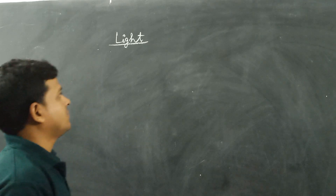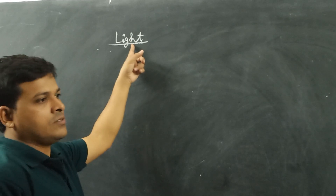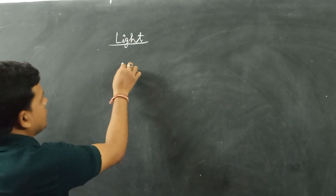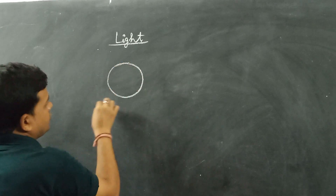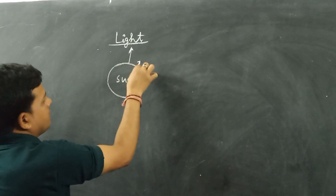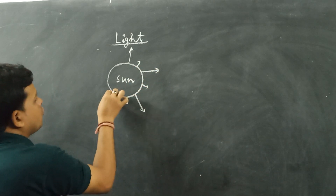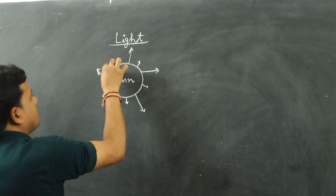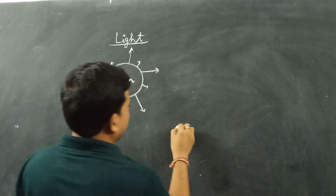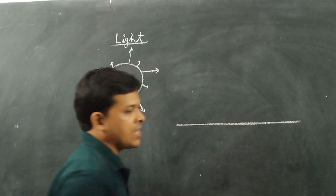Here we will learn how to particularly define this form of energy, that is light. How can you define it? How can we see an object? Let us consider the facts. This is the sun, and light rays are coming from the sun, due to which light exists on the earth's surface. Let us consider the earth's surface.